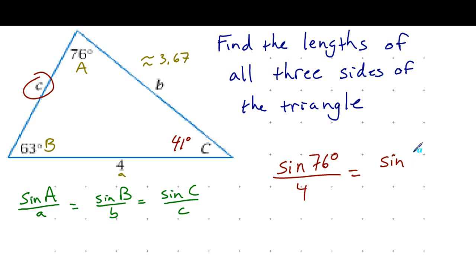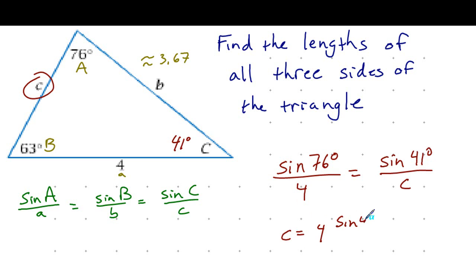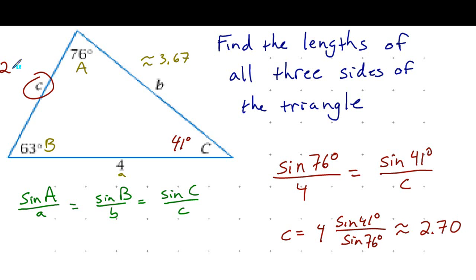So sine of 41 degrees over C — cross-multiplying and solving gives C equals 4 times sine of 41 degrees divided by sine of 76 degrees, which comes out to approximately 2.70. So that side length is roughly 2.70.